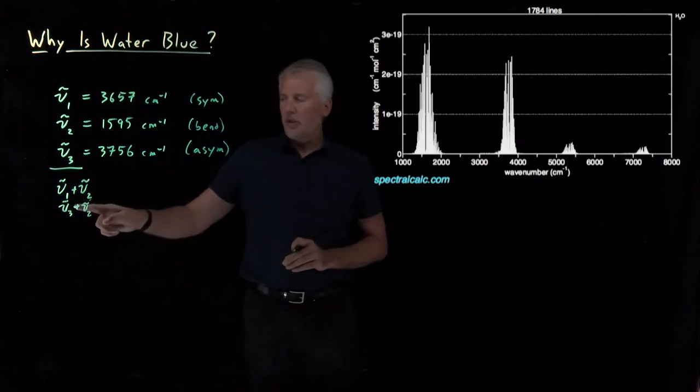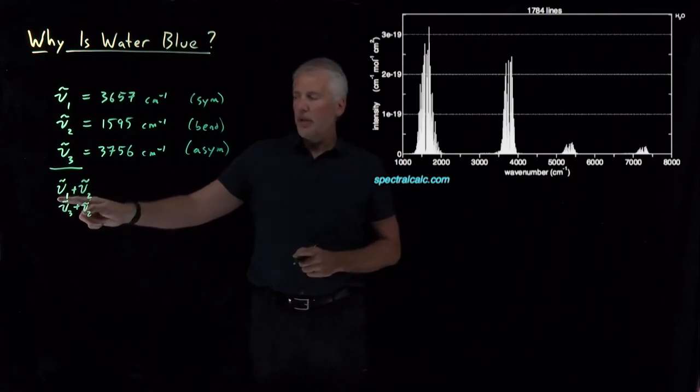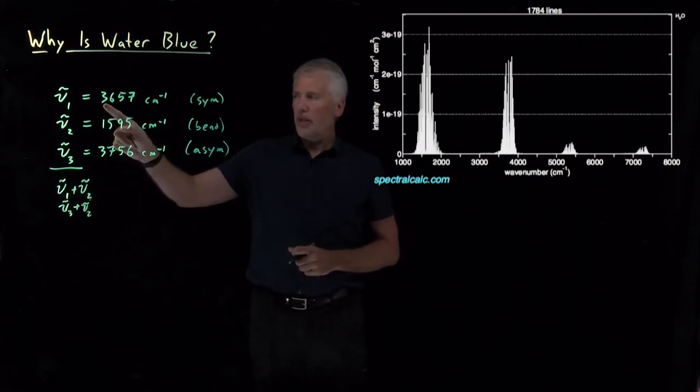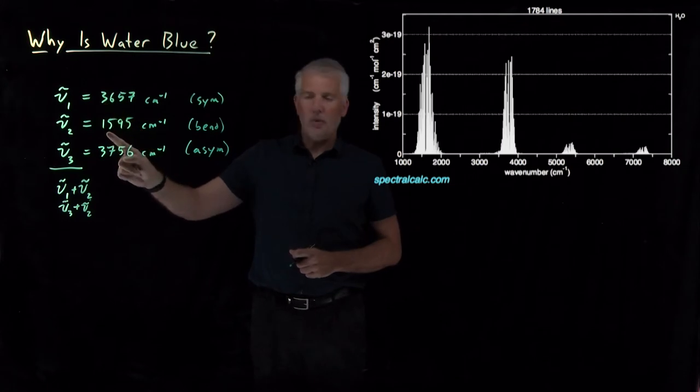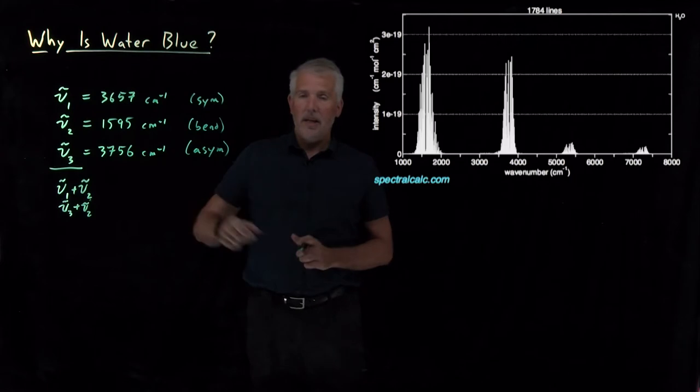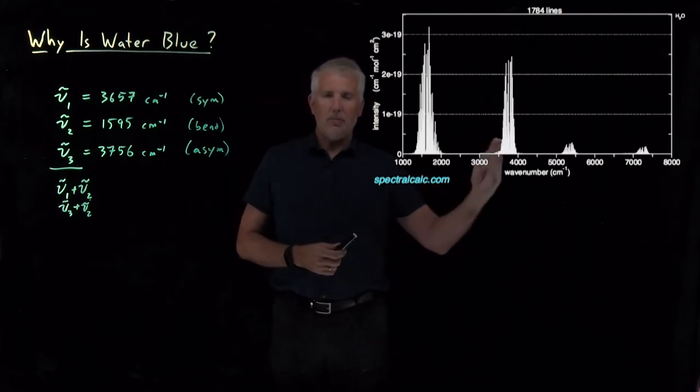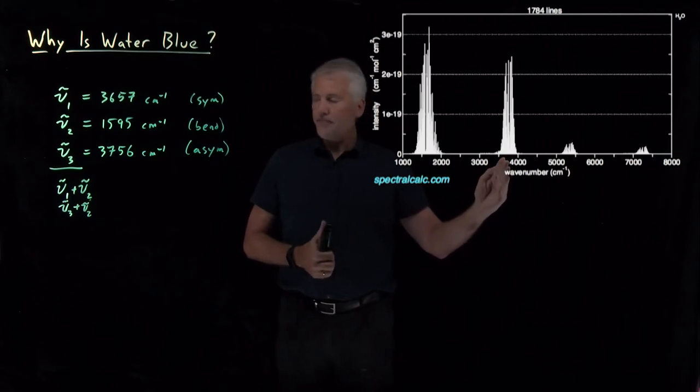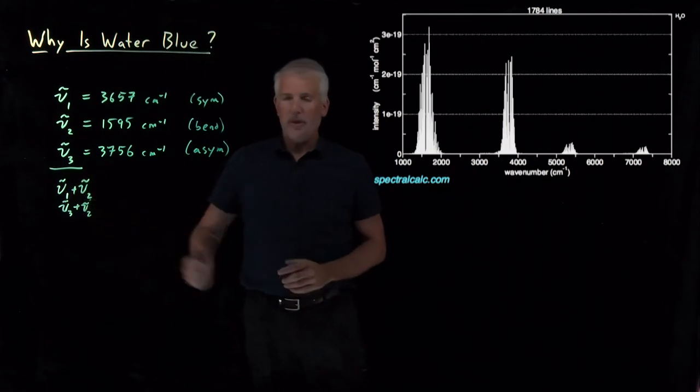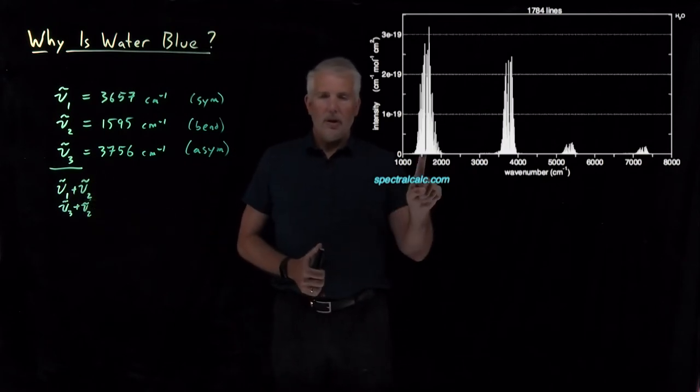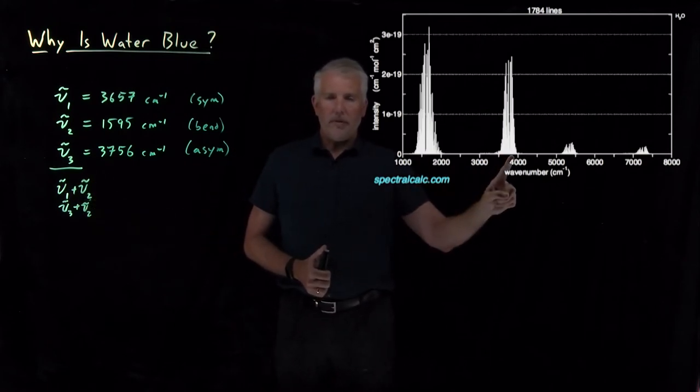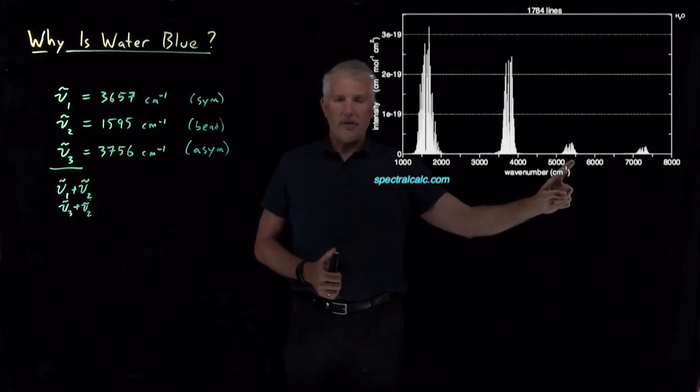What that means is the molecule is simultaneously increasing by one quantum number in its symmetric stretch and by one quantum number in its bend. It's exciting both of those motions at the same time. That costs an amount of energy equivalent to the energy of the bending mode plus the energy of the stretching mode, whichever vibrational mode, nu 1 or nu 3, is being increased. So, that 1,500 plus about 3,500 adds up to a little above 5,000 wave numbers.